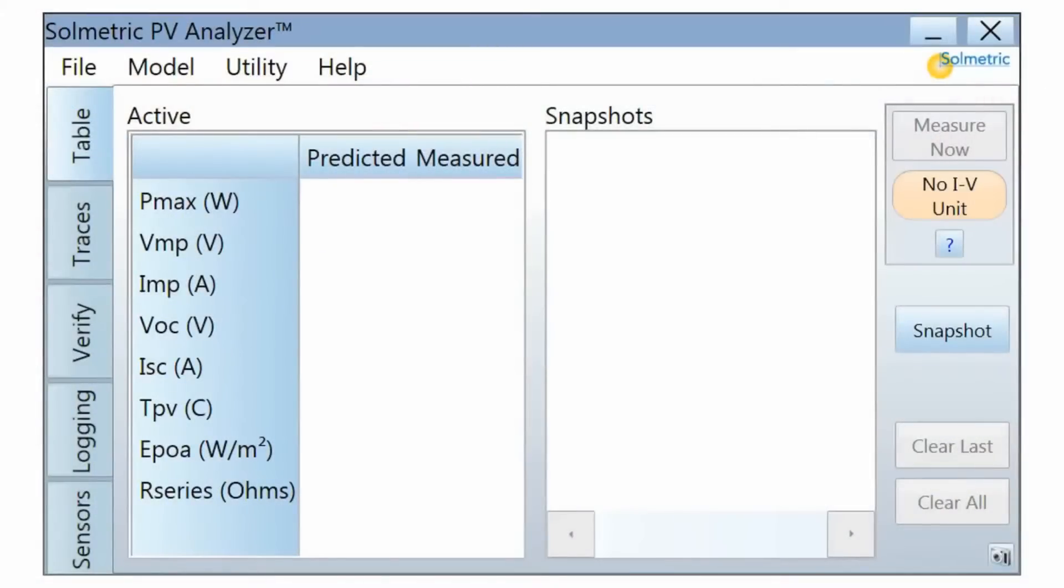When the wireless connection has been made, notice that the status indicator in the software has changed from No IV Unit to Ready and is now colored green. This means the PV Analyzer is ready to take a measurement.